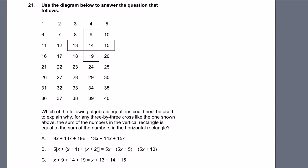Problem 21: use the diagram below to answer the question that follows. They have numbers listed in order, 5 per row. Which of the following algebraic equations could best be used to explain why, for any 3 by 3 cross like the one shown, the sum of the numbers in the vertical rectangle is equal to the sum of the numbers in the horizontal rectangle?